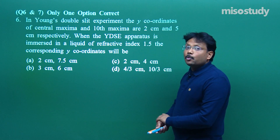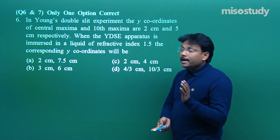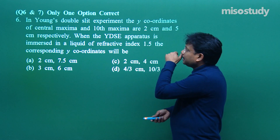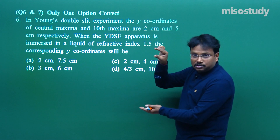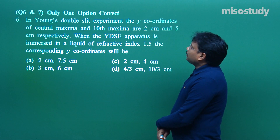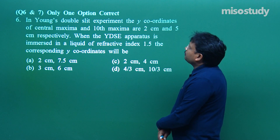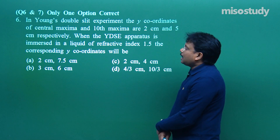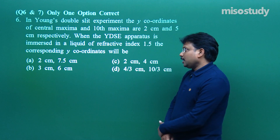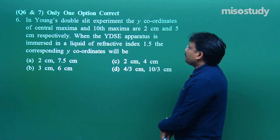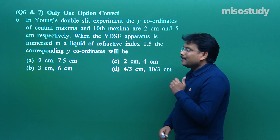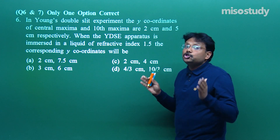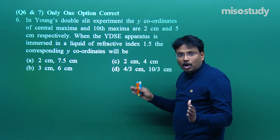In Young's double slit experiment (YDSE), the y-coordinates of the central maxima and 10th maxima are 2 cm and 5 cm respectively. When the YDSE apparatus is immersed in a liquid of refractive index 1.5, the corresponding y-coordinates will change to what?